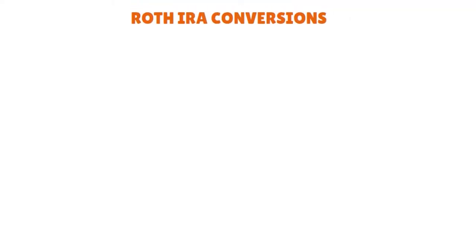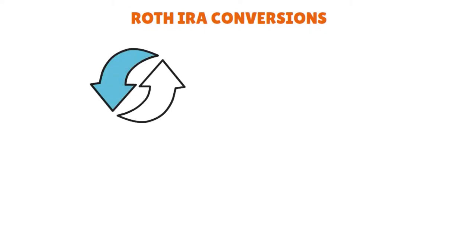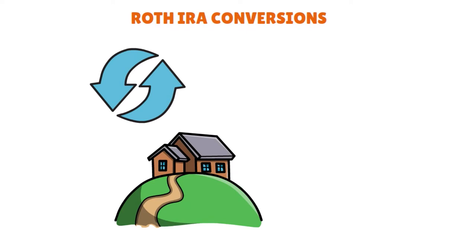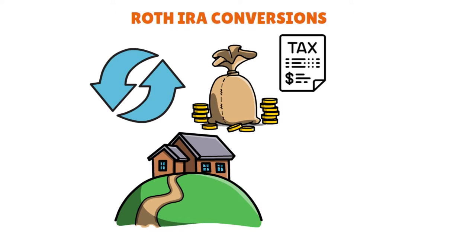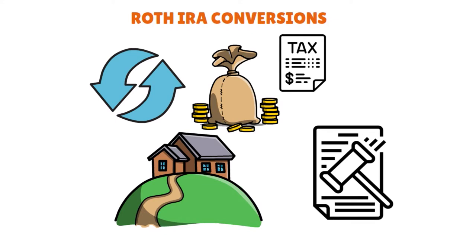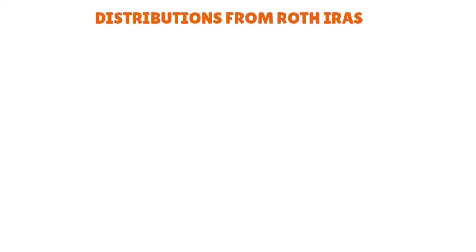What about Roth IRA conversions? Someone who converts their traditional SEP or SIMPLE IRA to a Roth IRA must be able to distinguish between the conversion assets and the amounts representing regular Roth IRA contributions and earnings. This distinction is necessary for determining whether a portion of a Roth IRA distribution is subject to income tax and/or penalty. A distribution from a traditional SEP or SIMPLE IRA that is deposited into a Roth IRA is a conversion contribution.